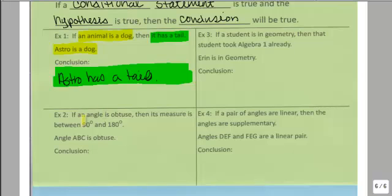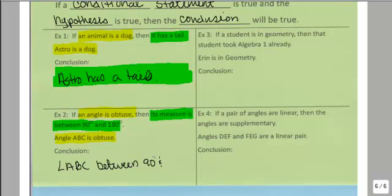So if an angle is obtuse, then its measure is between 90 and 180. Angle ABC is obtuse. So that means angle ABC is between 90 and 180 degrees.